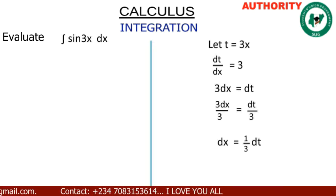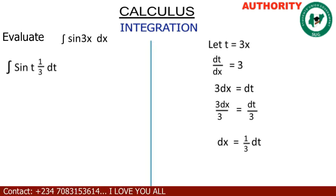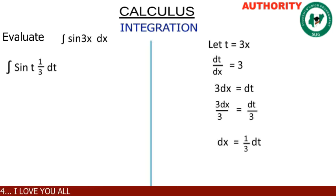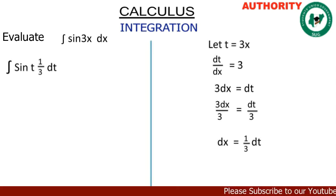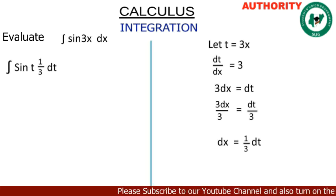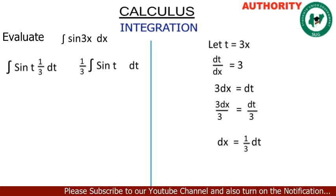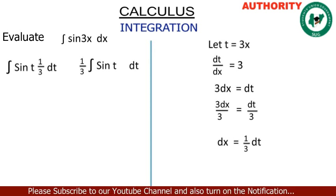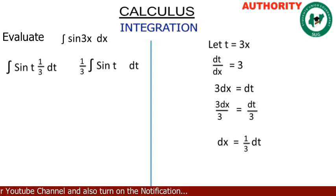That means we are going to have the integral of sine t — we replaced 3x with t and dx with 1 over 3 dt. We take the 1 over 3 to the front of the integral, so we have 1 over 3 times the integral of sine t dt.